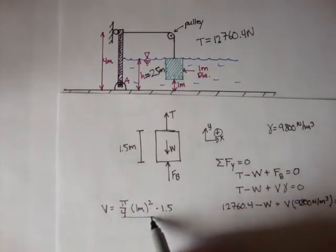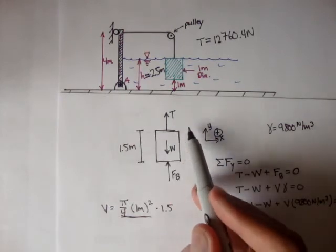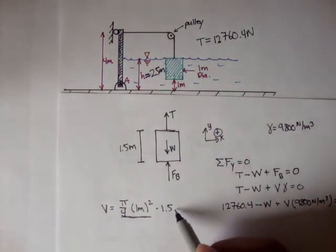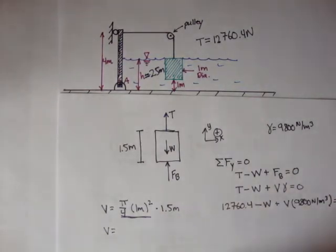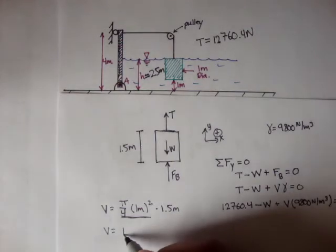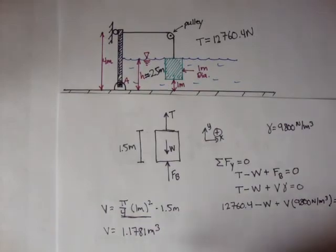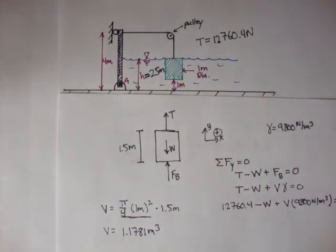This right here gives us the area of the circular part, and the circular part's area times the height is the volume. And we figure out that volume is about 1.1781 meters cubed, and that's the volume of this cylindrical block thing.